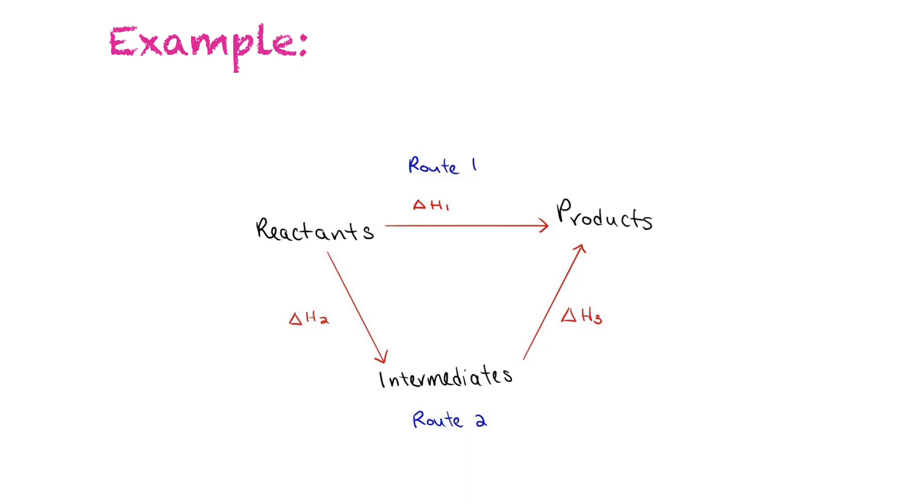So we can look at this one reaction. We want to figure out what this delta H is in route 1, going directly from these reactants to these products. If we don't know this, but we do know the delta H to make an intermediate, and then that intermediate, we know the delta H to make the desired product, so route 2, we could add these two reactions to find out this delta H. And we'll go through some examples and highlight some rules that we need to follow to determine this.